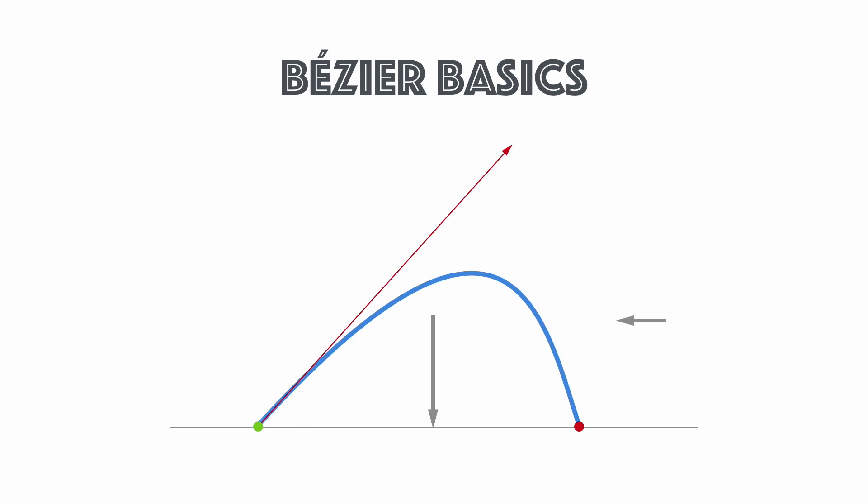As an aside, this is actually what the very first computers were used to do — calculate projectile paths like this. This is a great way to represent a very complex curve with very little information, just like vector graphics.